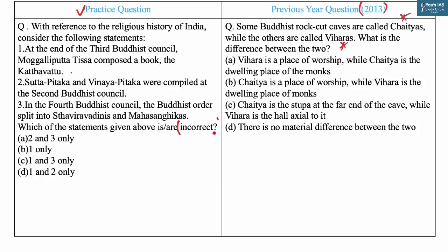Statement one says: at the end of the third Buddhist council, Moggaliputta Tissa composed the Kathavatthu. This is correct — the third Buddhist council held in 250 BC was chaired by Moggaliputta Tissa, who compiled the Kathavatthu to keep the Dhamma pure. The Kathavatthu is the fifth of seven books of the Abhidhamma Pitaka. Statement two says: Sutta Pitaka and Vinaya Pitaka were compiled at the second Buddhist council — this is incorrect.